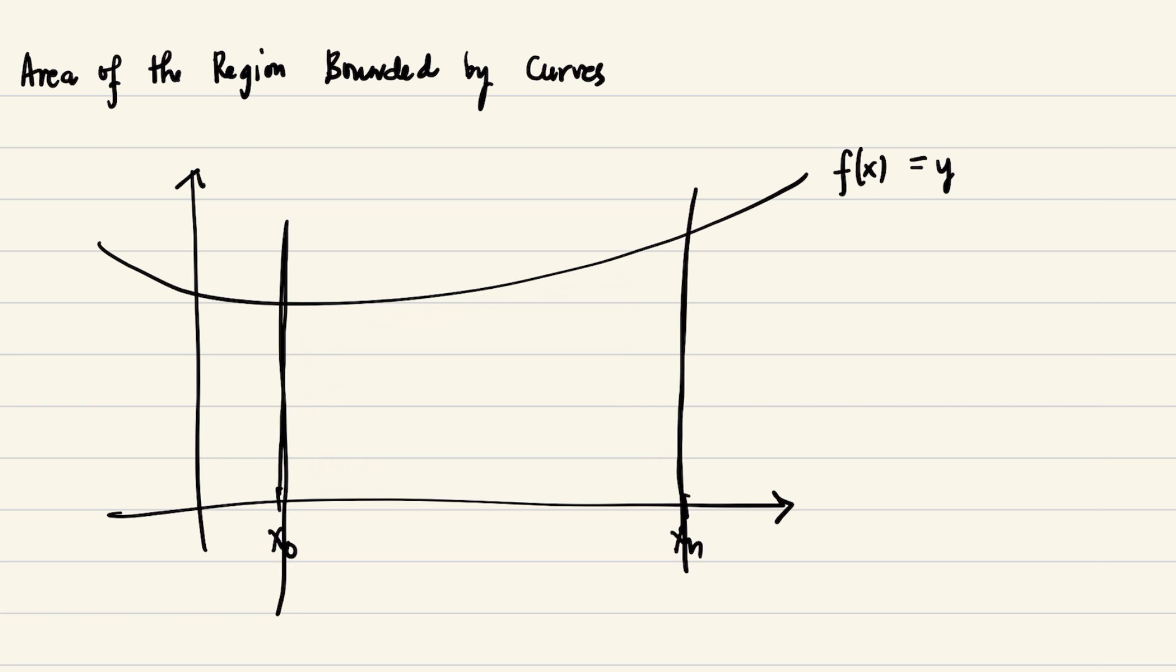So how do we do that? Considering this is a closed interval a, b, we can partition this region such that we have x sub 0 equals a, and x sub n equals b. So x sub 0 is less than x sub 1, less than x sub 2, and so on, until less than x sub n minus 1, less than x sub n which equals b. Let's say we pick a sub interval here from x sub i minus 1 to x sub i. From this sub interval, we pick an element, psi sub i.